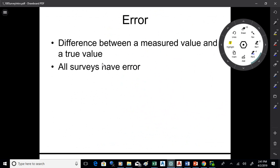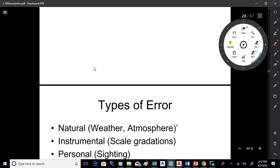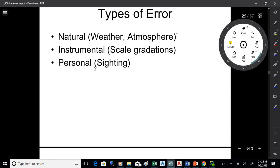Another little concept here on page 116 is errors and mistakes. An error is a difference between what you measure and the true value. All surveyors, all surveys have error. It's a fact of life. Now there's different kinds of error.